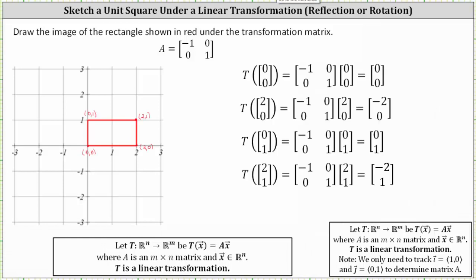Remember we can think of vectors as ordered pairs, where the ordered pair would be the terminal point of the vector in standard position. Once we have the four ordered pairs, we can find the transformation under matrix A by determining the product of matrix A and the corresponding vectors written as two-by-one column matrices, as we see here on the right.